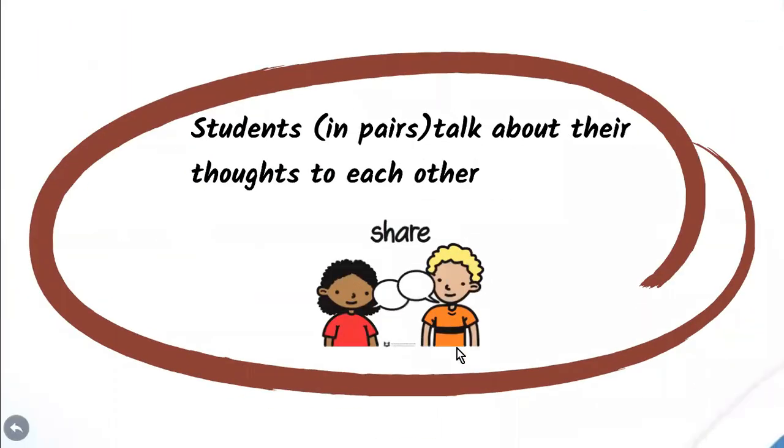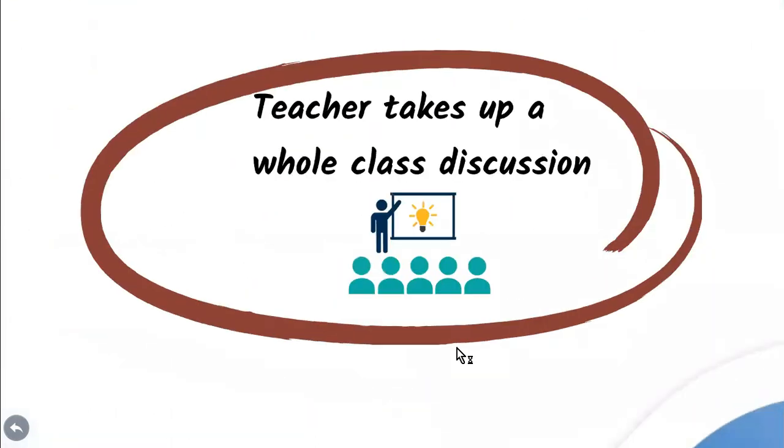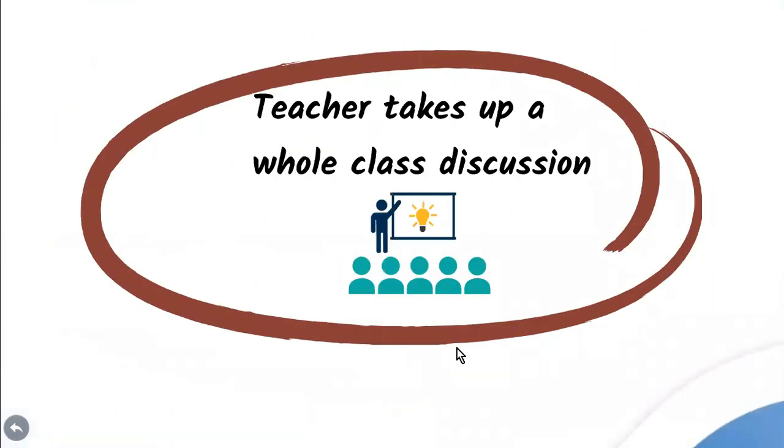After this, the teacher provides opportunities to the students to talk in pairs about their thoughts. So one student speaks and the second one listens, then the second student speaks and the first one listens. After this, the teacher takes up a whole class discussion wherein there are some new ideas which flow in. With this, the students get to know what the teacher is thinking, students also get to know what their peers are thinking, and they are also thinking about how would they want to go about and attempt a particular task.